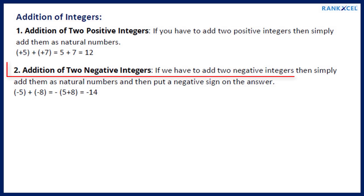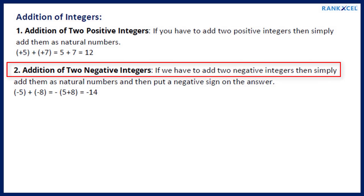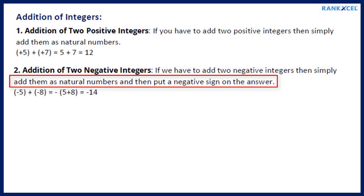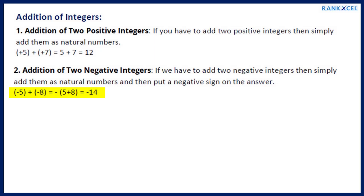Rule 2 — Addition of 2 negative integers: If we have to add 2 negative integers, then simply add them as natural numbers and then put a negative sign on the answer. Example: minus 5 plus minus 8 equals minus 13.